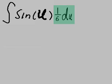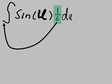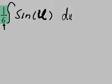Let's reformat it to be 1 over 6 du. Let's take the 1 over 6, which is a constant, and move it over to the left in front of the integral sine.